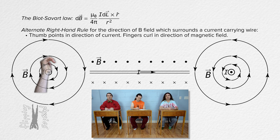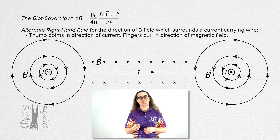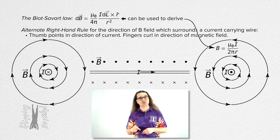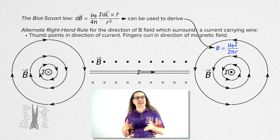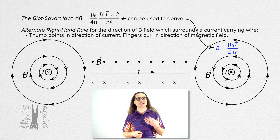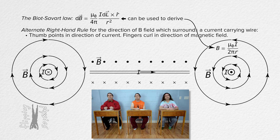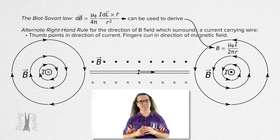Thanks for the alternate right-hand rule for the magnetic field around current-carrying wires — it actually does make it much easier. The Biot-Savart Law can be used to determine the magnitude of the magnetic field a distance r from an infinitely long straight current-carrying wire. The magnetic field equals the magnetic permeability of free space times current, all divided by the quantity 2π times distance r. However, we are not going to do that derivation today. Thank you very much for learning with me today — I enjoy learning with you.